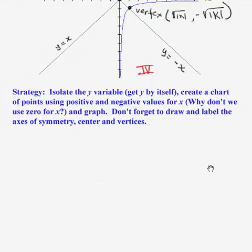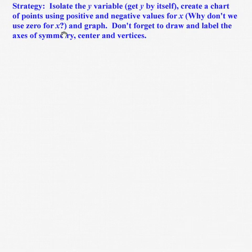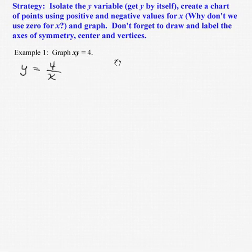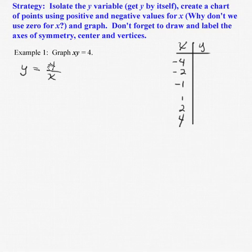Now, how do we actually graph these? Here's our strategy: get the y variable by itself, then create a chart of points including positive and negative values for x. We don't use x equals 0 because the domain is all real numbers except 0. Don't forget to draw and label the axes of symmetry, the center, and the axes. Let's take a look at an example: x times y equals 4. First step, get y by itself: y equals 4 divided by x. I'm choosing points that are factors of 4, so they divide in nicely.